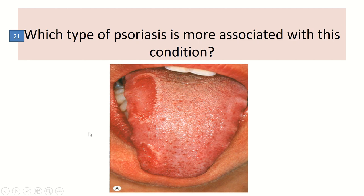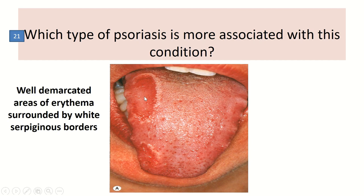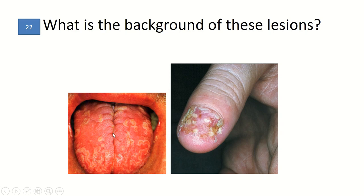Which type of psoriasis is more associated with geographic tongue? There is a well-demarcated area of erythema surrounded by a wide serpiginous border, indicative of geographic tongue. This finding can be found in normal individuals and in patients with psoriasis, especially pustular psoriasis. The psoriasiform findings include geographic tongue and fissured tongue, both indicative of annulus migrans.